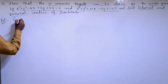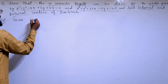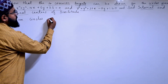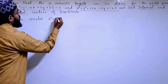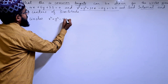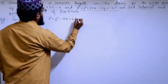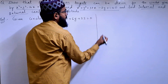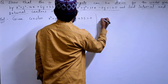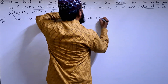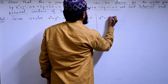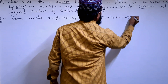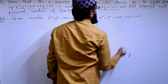The given circles are: x² + y² − 14x + 6y + 33 = 0, and the second circle is x² + y² + 30x − 2y + 1 = 0.